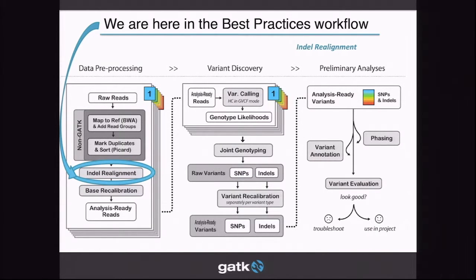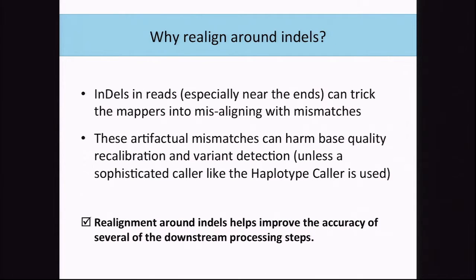If you're using DNA, this is going to be the first use of the actual GATK. The purpose of indel realignment is that we have to realign around indels because when you align a read against the reference near the ends of the reads, indels can be masked when the mappers misalign against the reference. These artificial mismatches can harm base quality score recalibration and variant detection later on in the workflow unless we use indel realignment.